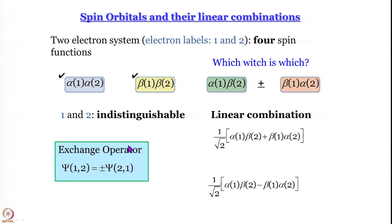Exchange means exchanging the labels — whatever is in terms of 1 becomes in terms of 2, and vice versa. The first linear combination [α(1)β(2) + β(1)α(2)]/√2: upon applying the exchange operator, it does not change sign — so it is symmetric with respect to exchange.